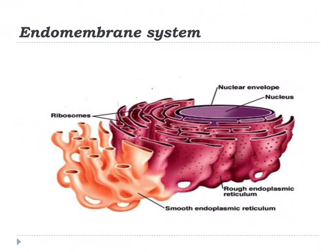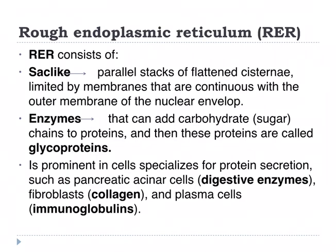The rough endoplasmic reticulum consists of sac-like parallel stacks of flattened cisterns limited by membranes that are continuous with the outer membrane of the nuclear envelope. It contains many enzymes that can add carbohydrate sugar chains to proteins, and these proteins are then called glycoproteins. It is prominent in cells specialized for protein secretion, such as pancreatic acinar cells that produce digestive enzymes, fibroblasts that produce collagen, and plasma cells that produce immunoglobulins.